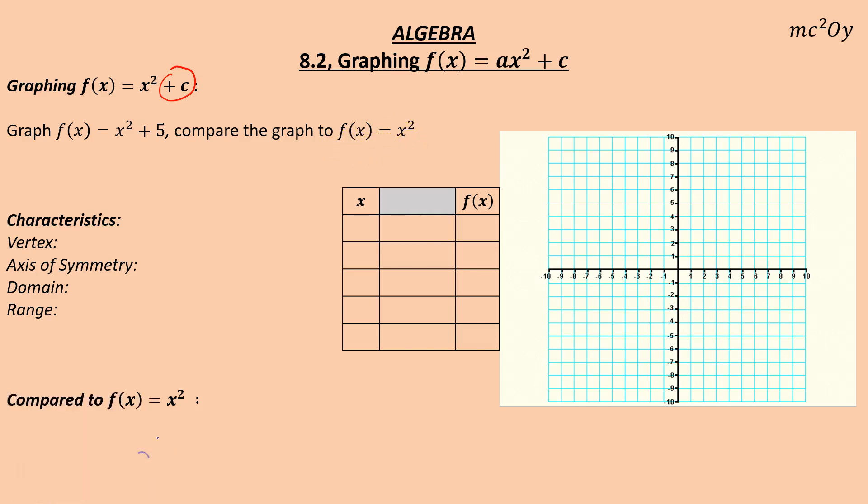First thing I'm going to do is graph x² + 5 and compare it to the parent function f(x) = x². So let's go ahead and put the points in for f(x) = x² - just the parent function real quick: (0,0), (1,1), (2,4), (3,9), and then (-1,1), (-2,4), (-3,9).